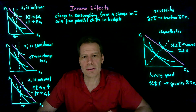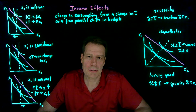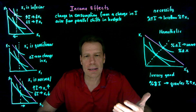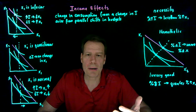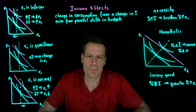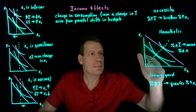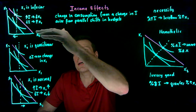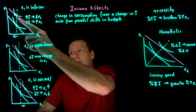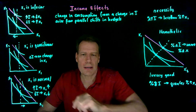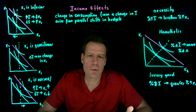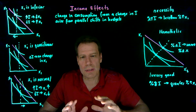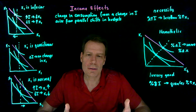Now, in all of these cases, in all of these definitions of goods, the key to knowing where the new optimal bundle is going to lie as income changes is to know something about the underlying map of indifference curves. Here we know that the underlying map is homothetic; here we know it's quasi-linear; here we know the new tangency lies to the left, and here it lies to the right. So income effects arise from how indifference curves within an indifference map relate to one another.